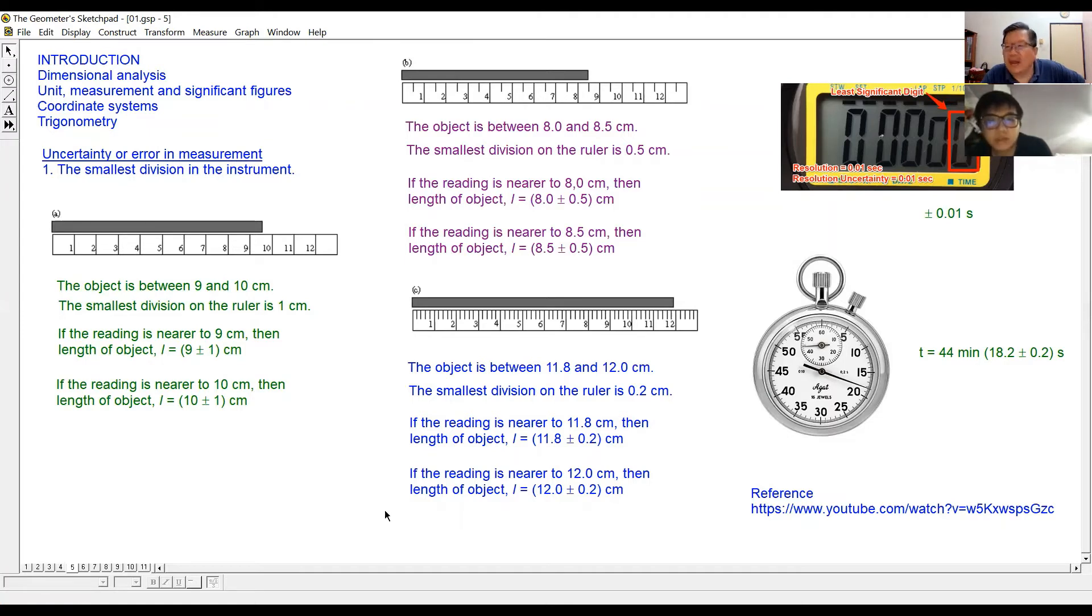So if I ask you to write down in this uncertainty form, how are you going to write? Plus minus 0.5. Yes, the number that you read, then plus the error. So you can take it 8.0 plus or minus 0.5 cm, or 8.5 plus or minus 0.5 cm.